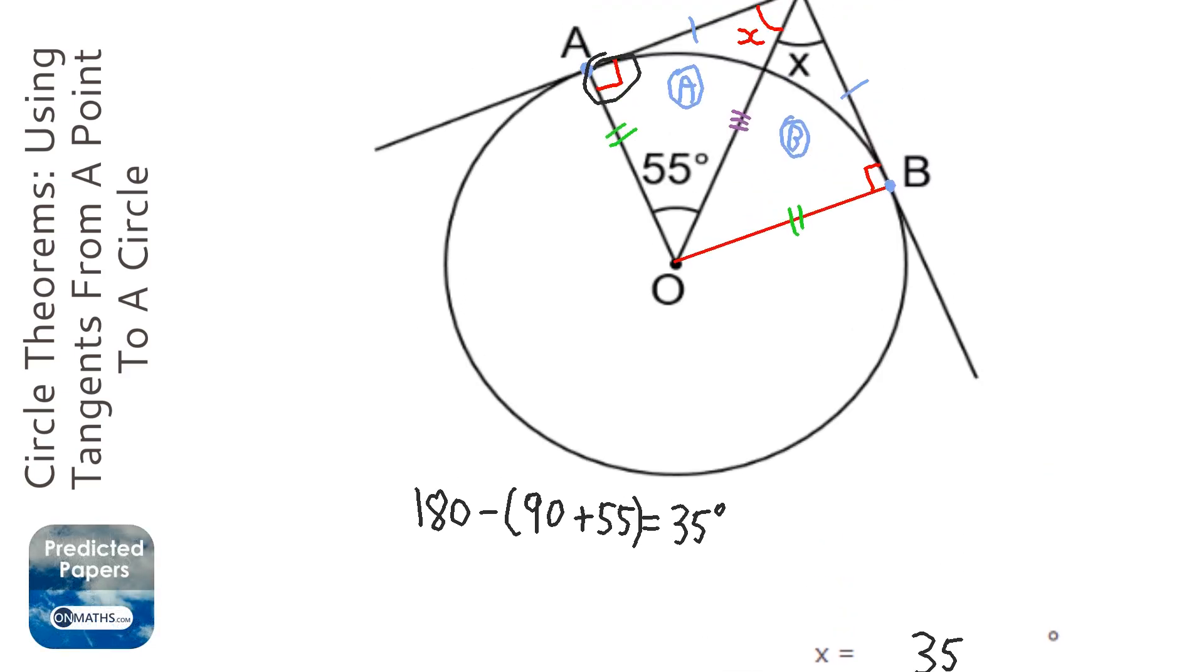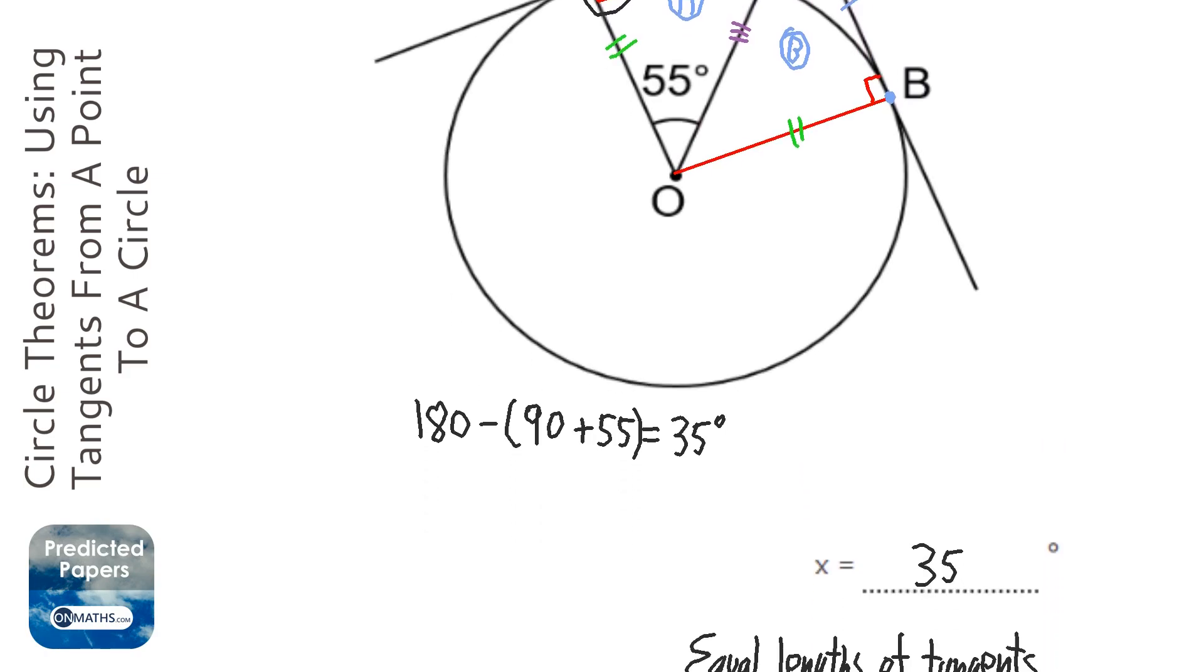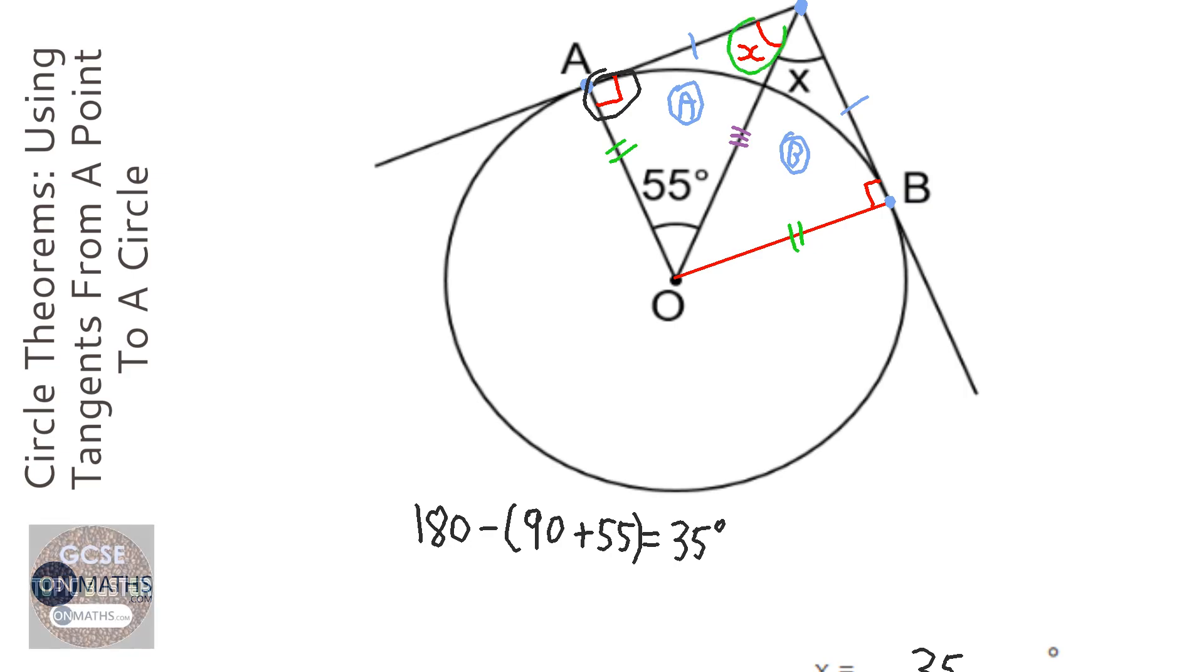And we also need to identify the fact that the two triangles are mathematically congruent, or just congruent. So you need that in your answer. The fact that the reason that this is x here is because all the angles and all the lengths are the same in both those triangles. So there's quite a lot of writing you need to put down for that question.